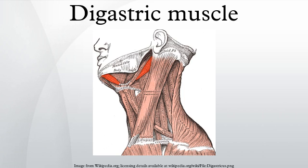The digastric muscle is a small muscle located under the jaw. The term digastric muscle refers to this specific muscle. However, other muscles that have two separate muscle bellies include the ligament of trites, omohyoid, and occipitofrontalis.